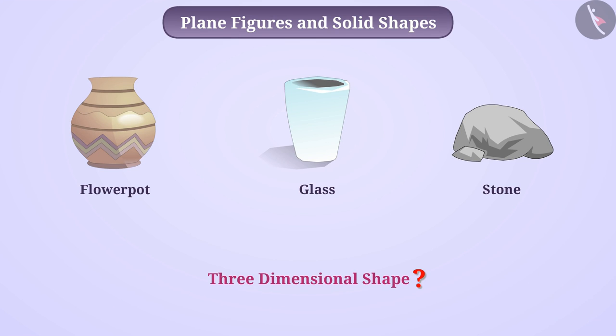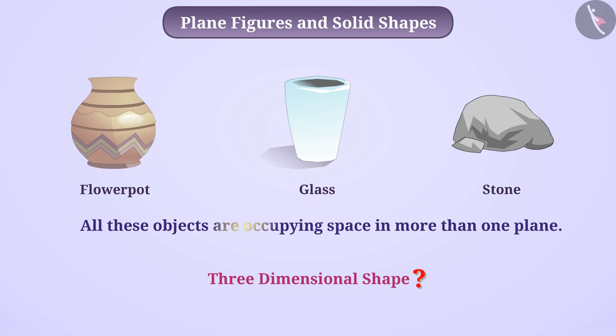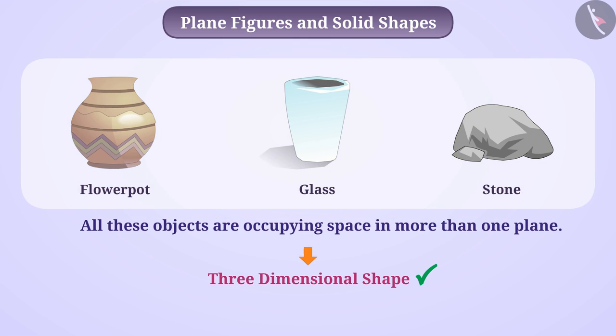Let me tell you. Here we can see that all these objects are occupying space in more than one plane. So, we can say that all these objects are three-dimensional shapes. Look around your surrounding and find out which objects are three-dimensional.